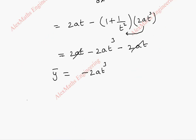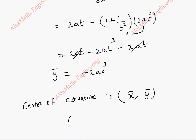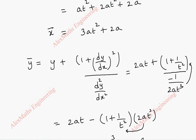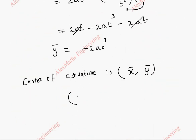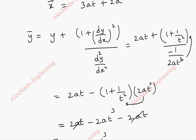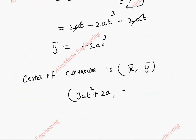So we got the center of curvature. The center of curvature is (x-bar, y-bar), where x-bar is 3at² plus 2a, and y-bar is minus 2at³.